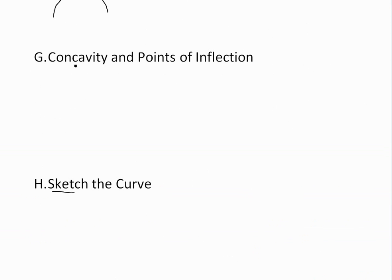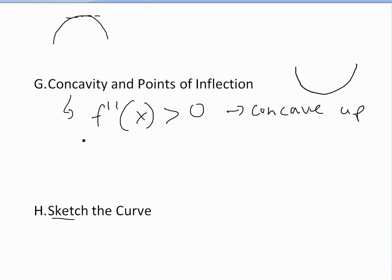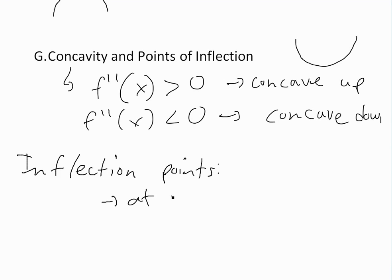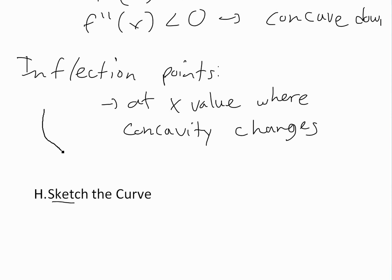Part G of the guidelines looks at concavity and points of inflection. If f double prime of x is greater than zero, then this is concave upwards — it looks like a cup shape. If f double prime of x is less than zero, then this is concave down. An inflection point is where the concavity changes at a point — for example, where the graph changes from concave up to concave down, or the opposite.